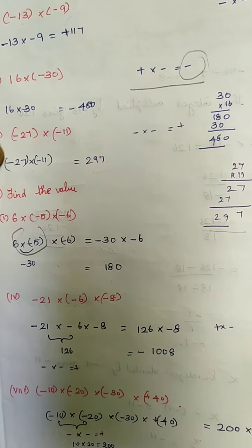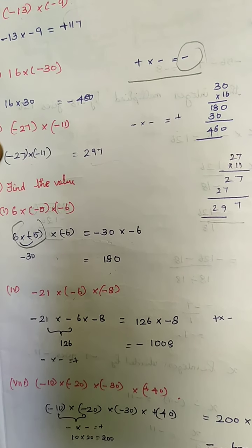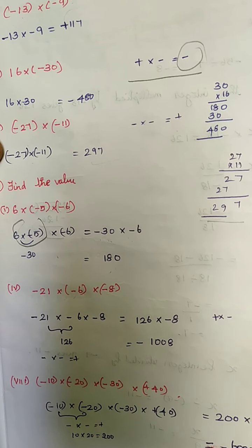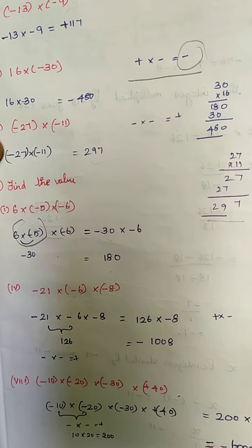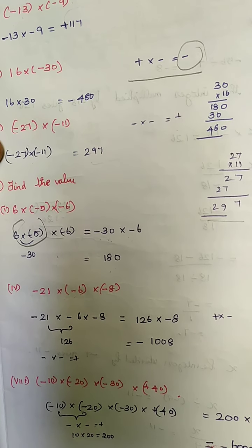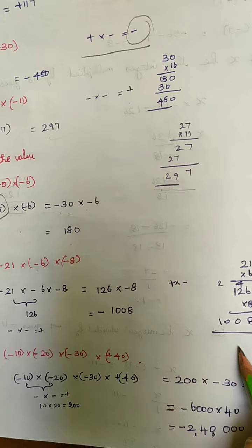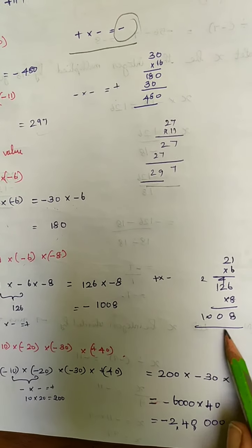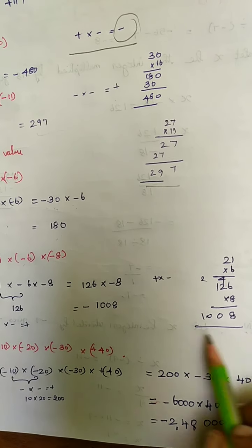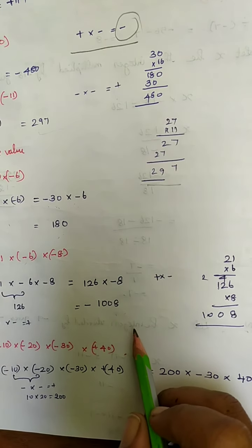Fourth subdivision: minus 21, minus 6, minus 8. Multiplying minus 21 into minus 6 gives 126. Minus into minus is plus, so plus 126. Multiplied by minus 8: doing the multiplication gives 1008. Plus into minus gives minus, so the answer is minus 1008.